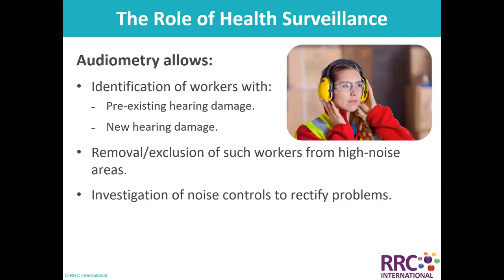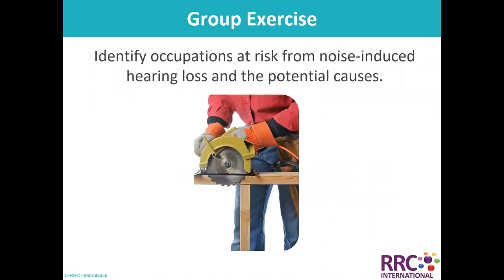The role of health surveillance: audiometry allows identification of workers with pre-existing hearing damage or new hearing damage, removal and exclusion of such workers from high noise areas, and investigation of noise controls to rectify problems. Group exercise: identify occupations at risk from noise-induced hearing loss and the potential causes.